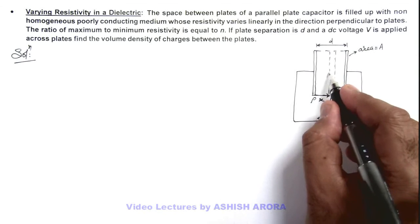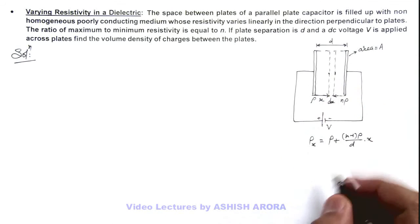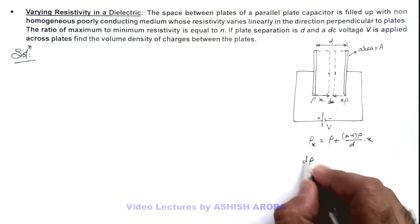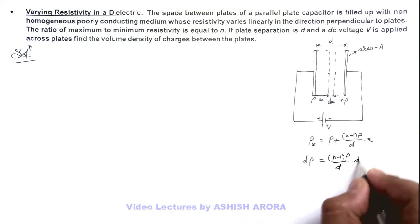And across these two sections of this elemental slab, we can find out the value of change in resistivity which can be written as dρ. And if we differentiate it, this will be (n-1)ρ₀/d multiplied by dx.